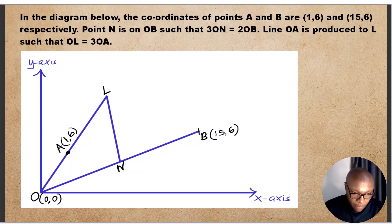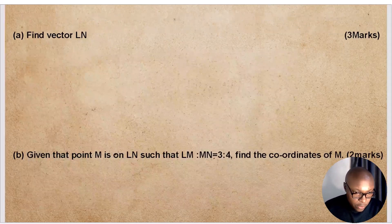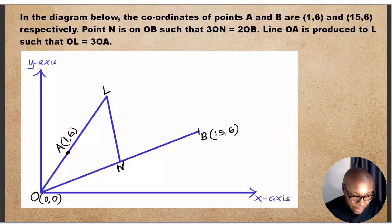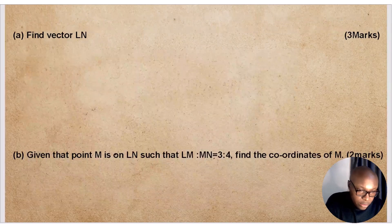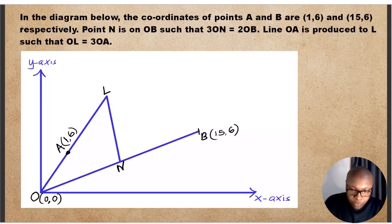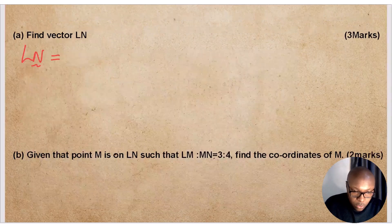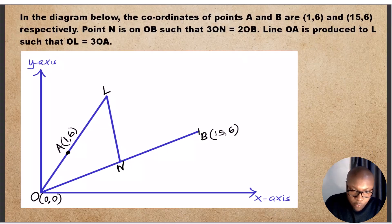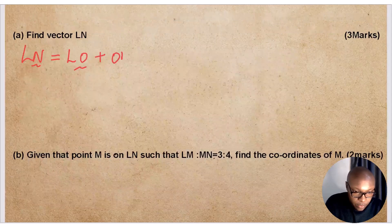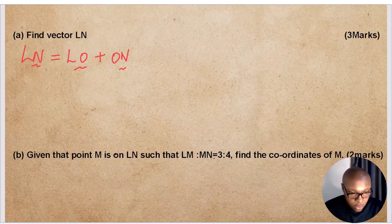So let's go to the first part. You are required to find vector LN. To find LN, you need to move from L to N. Vector LN will be obtained by moving from L to O, then from O to N.